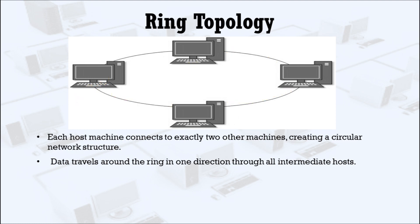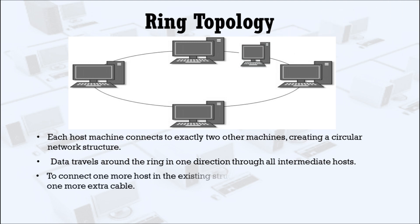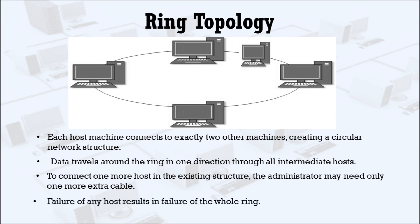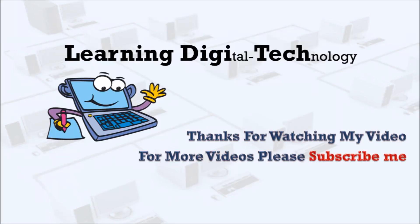If any new host or node wants to connect with the existing structure, the administrator may need only an extra cable, so we can say that it is cost efficient. In ring topology, failure of any host results in the failure of the whole ring. If this host or node stops working, the communication in the network stops. Thus, every connection in the ring is a point of failure.